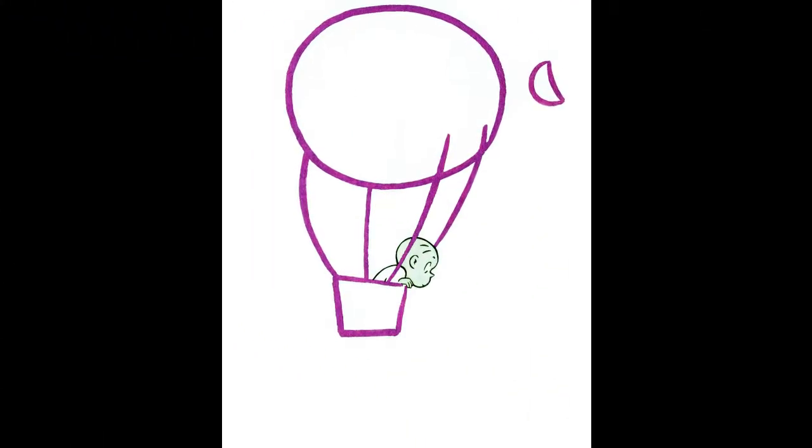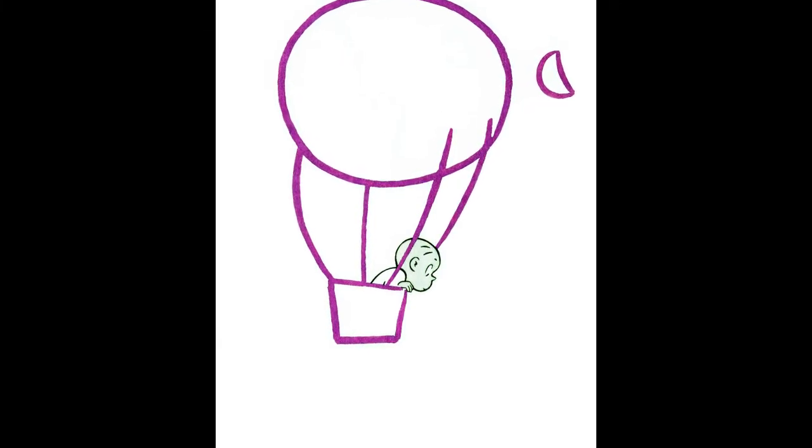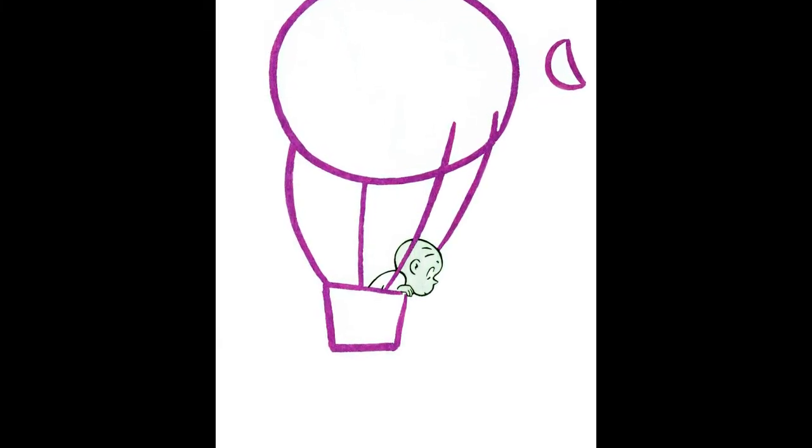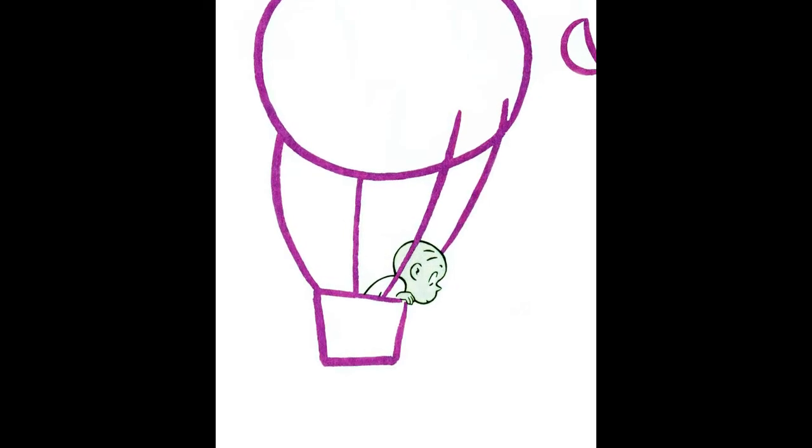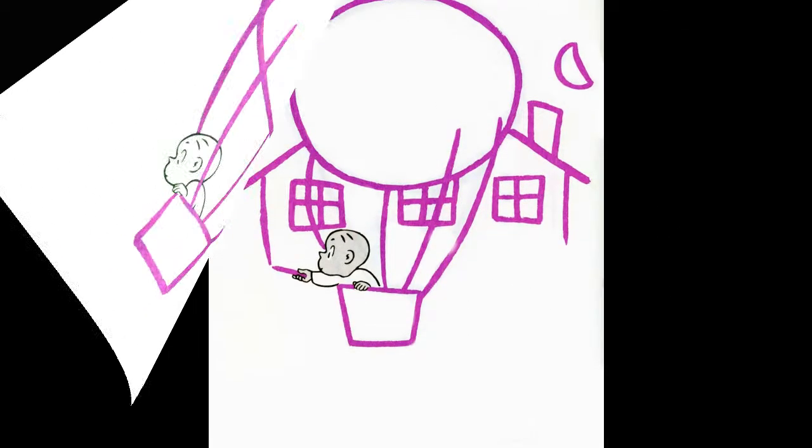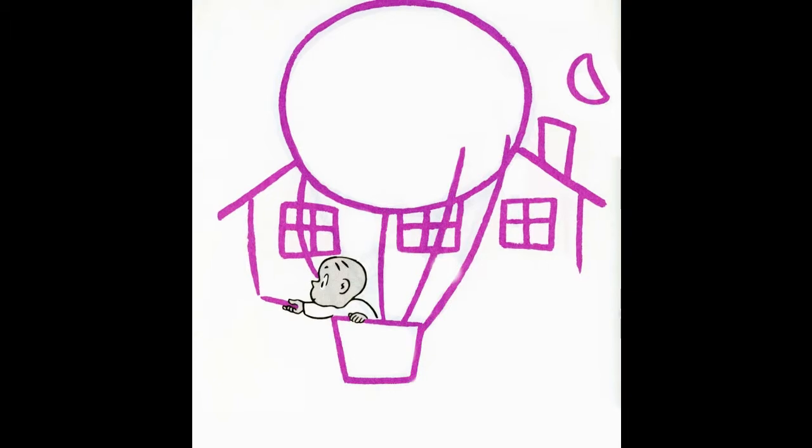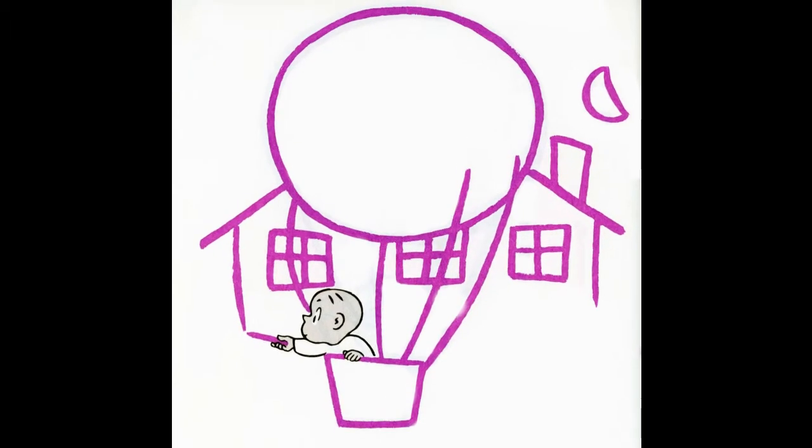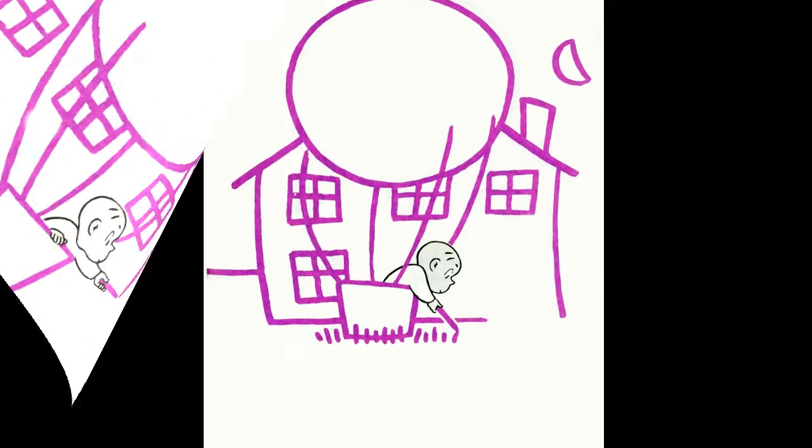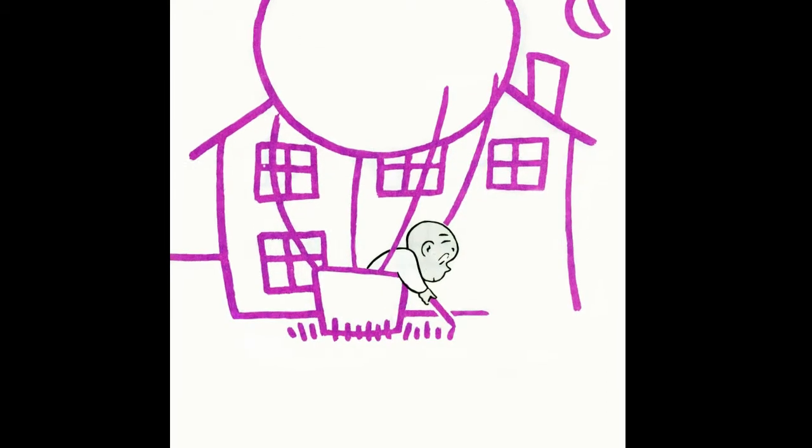He had a fine view from the balloon, but he couldn't see his window. He couldn't even see a house. So he made a house with windows, and he landed the balloon on the grass in the front yard.